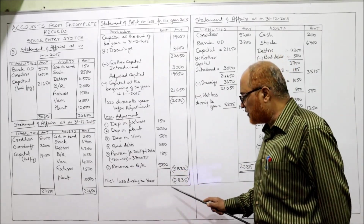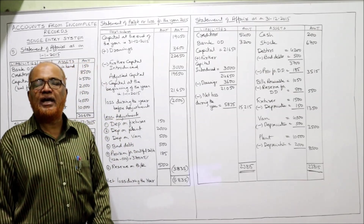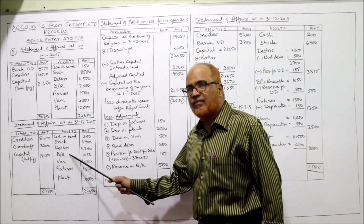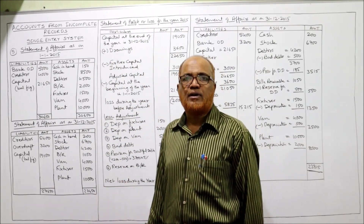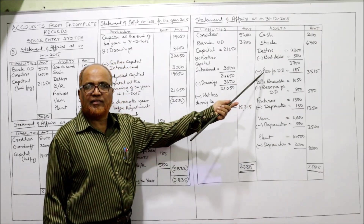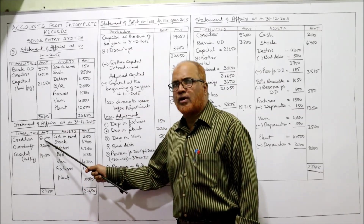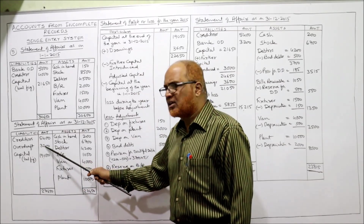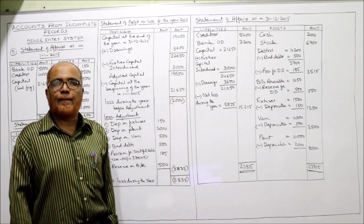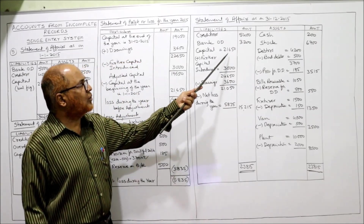Now we prepare the final statement of affairs after adjustment at the end of the year. On the liability side: creditors 5,400 — no adjustment — and bank overdraft 3,200 — no adjustment. Capital at the beginning was 21,650. Add further capital introduced of 3,000, giving 24,650. Deduct drawings of 3,600, leaving 21,050. Then deduct net loss of 5,835 to get closing capital of 15,215.